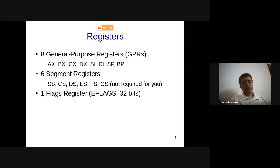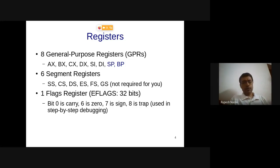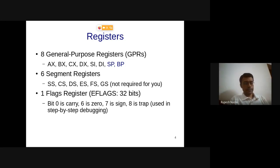There is also a flags register, which you cannot directly access — it must be accessed via instructions. This is called EFLAGS, a 32-bit set of bits where different bits correspond to different conditions such as carry, overflow, sign, and trap (used for GDB step). These flags get set as the effect of an instruction internally by the hardware, and the next instruction can implicitly read them. There is also the instruction pointer, called EIP.